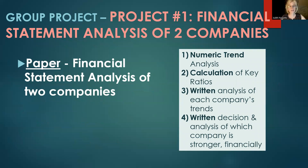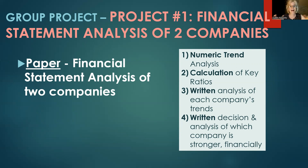So what are the projects about? Project one is a financial statement analysis of the two companies. It's a paper. It will involve numeric trend analysis — you'll look at three years of data and calculate whether changes are going up or going down. You'll calculate key ratios. Then you'll take all that numeric data and do a written analysis of each company's trends: write about company one, all their trends — are they on a growth track? Are they getting better? Then write about company two, their own trends. Finally, you'll compare the companies to each other, make a written decision of which company is better, and justify why with evidence from your data.